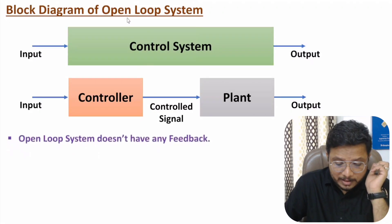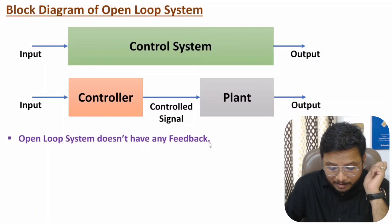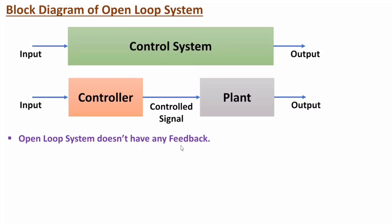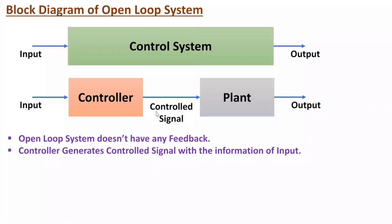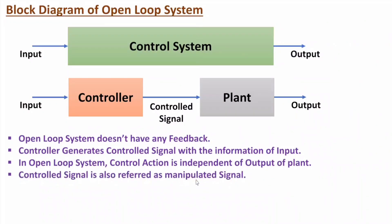Open loop systems do not have any feedback. The controlled signal is generated by the controller using only the input, and the control action of the controller is independent of the output. This controlled signal is also known as the manipulated signal.